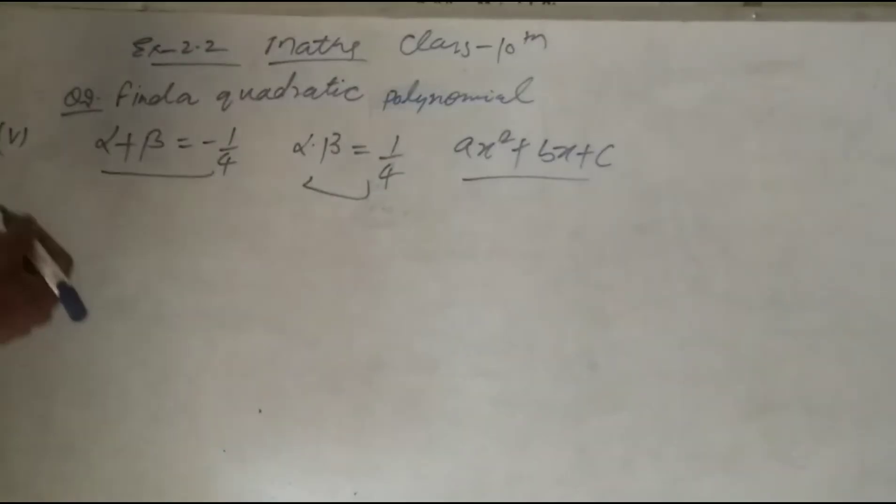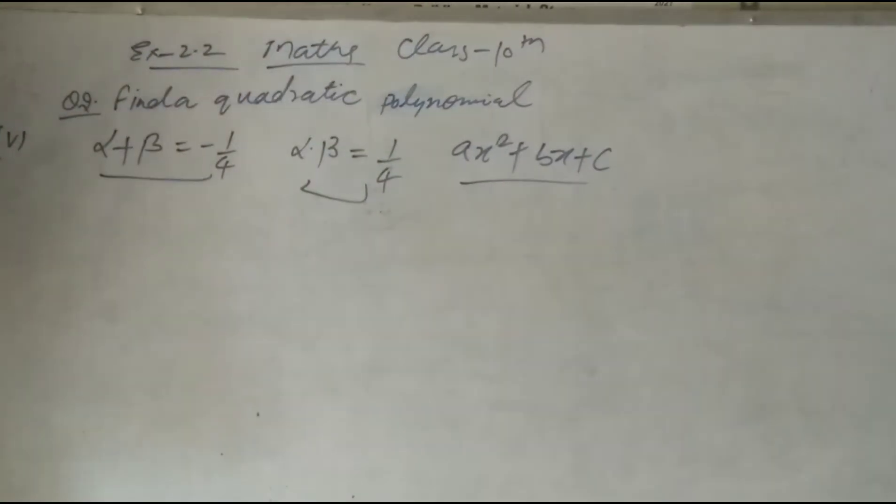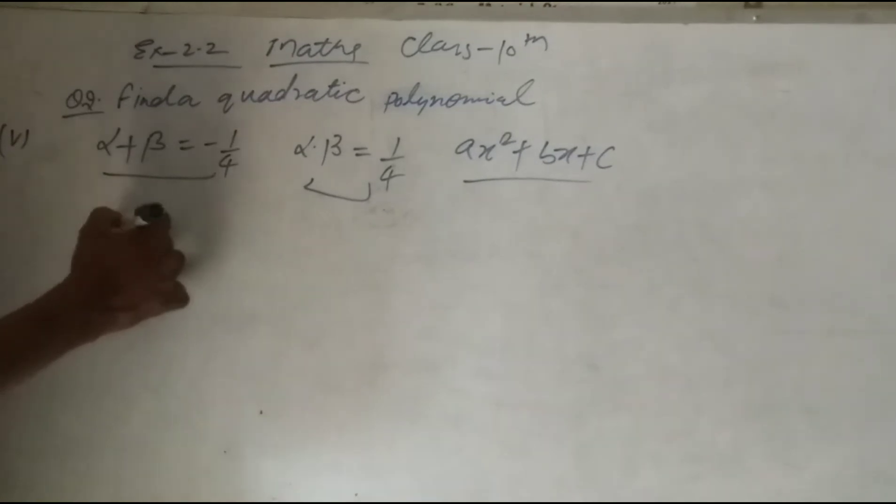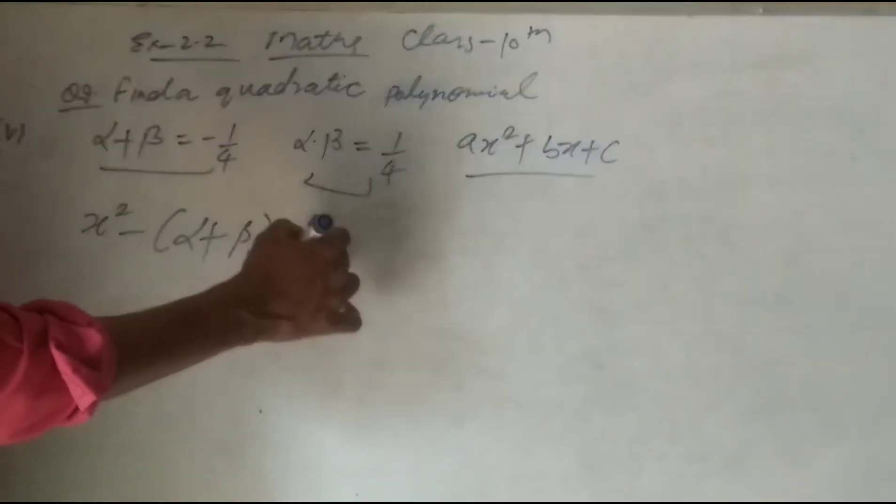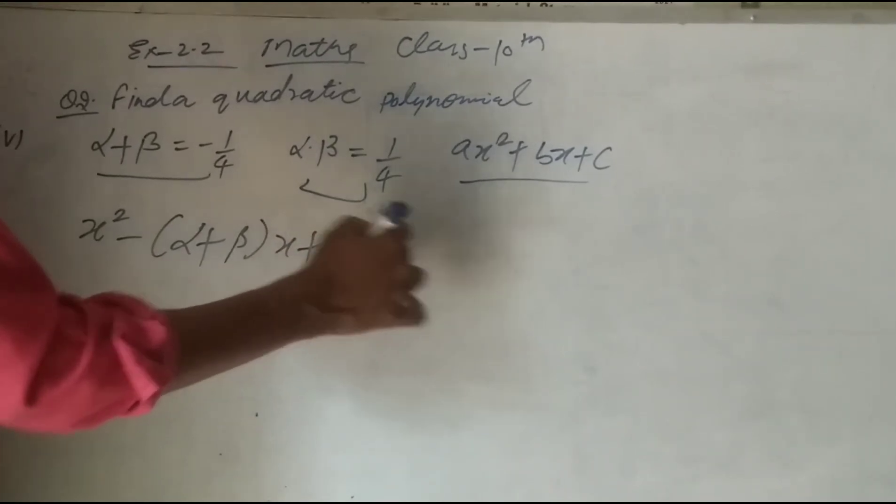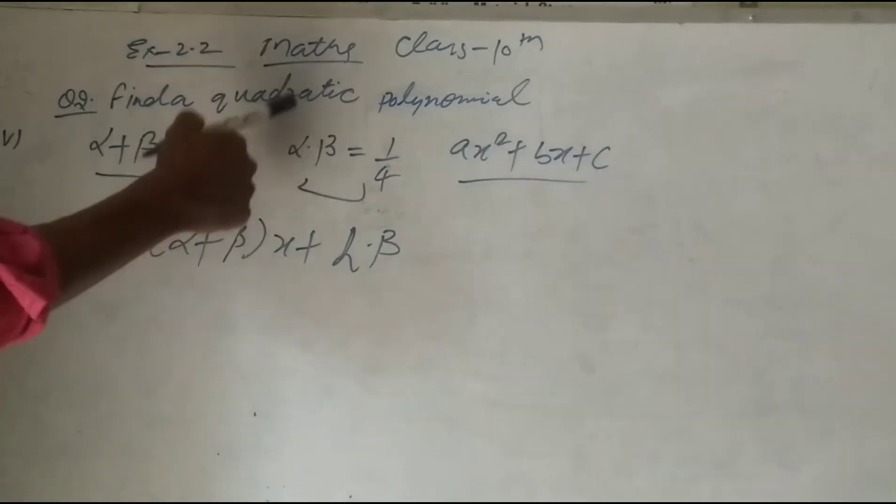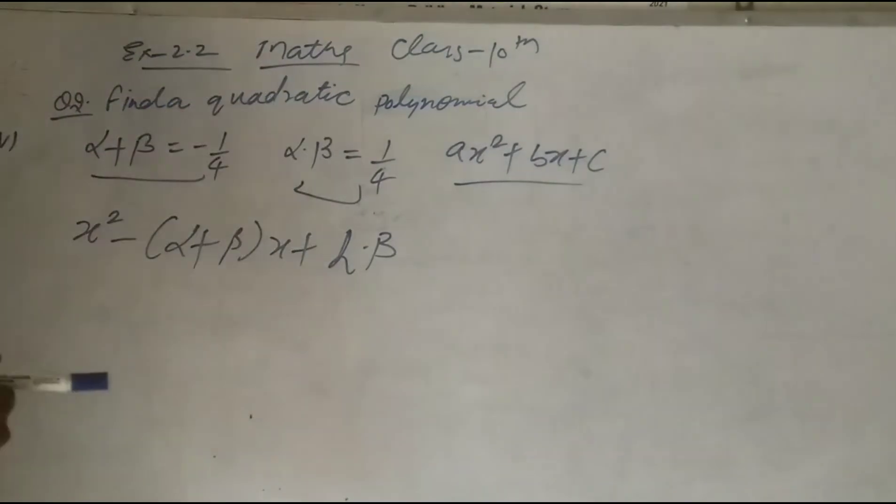So how can we make the quadratic polynomial? We know that x square minus sum of the zeros into x plus product of the zeros, alpha into beta. This is the formula to make a quadratic polynomial.